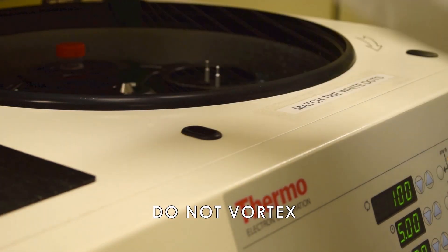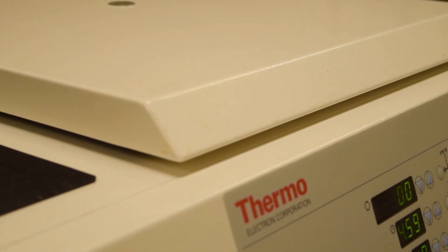Centrifuge the tube at 100 times G for five minutes at room temperature or 2 to 8 degrees Celsius.